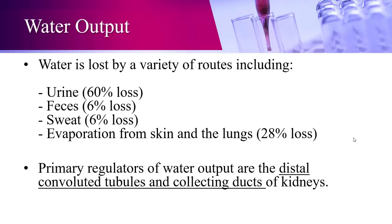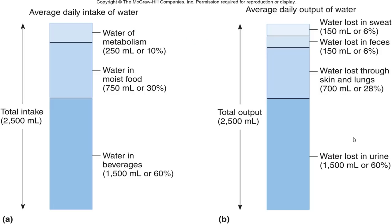Water can be lost through multiple ways. Urine accounts for about 60% of water loss. Water is also lost through sweat, feces, and evaporation from the skin and lungs — about 28%. The primary regulators for water output are the collecting ducts and distal convoluted tubules of the kidneys, which control what is eventually excreted as urine.